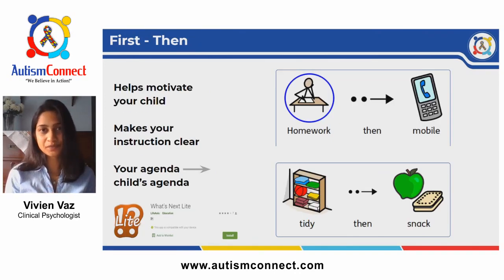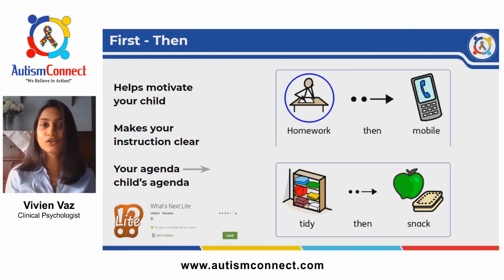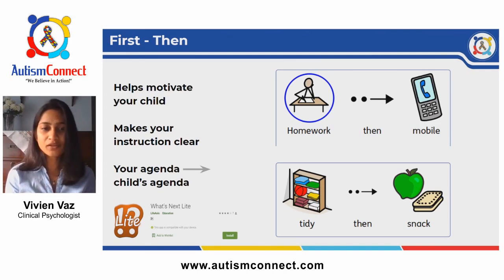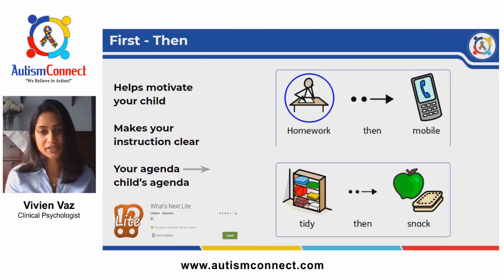The next strategy is called the first-and-then strategy. We all need motivation in some form to do things. In some cases the activity itself is motivating — like gardening, cooking, or singing. Others might be motivated by a salary at the end of the month. Similarly, there are activities your children can do for long periods of time, like watching TV or playing with toys, but for other activities they may need external motivation, like doing homework or helping with household chores.